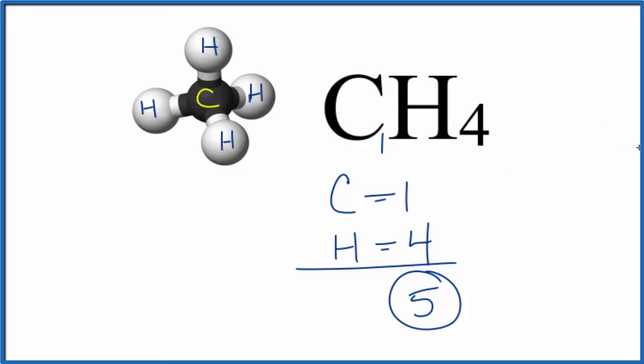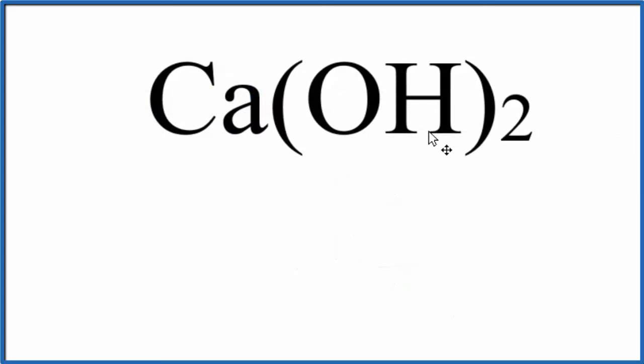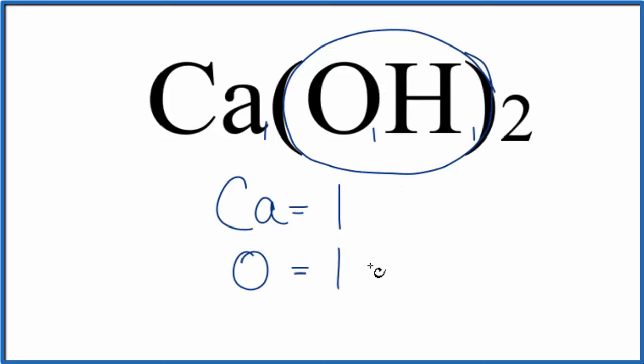But what if we have a compound with parentheses, something like calcium hydroxide? To find the number of atoms here, we know we have one calcium, and then within these parentheses, one oxygen and one hydrogen. So calcium, we have one of those. And then this two here, it applies to everything. Think of the parentheses as enclosing the entire OH. For the oxygen here, we have one of those, but we multiply it by the two outside the parentheses. Two oxygen atoms.